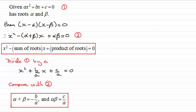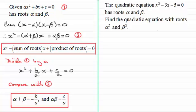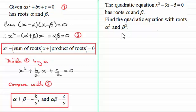Here is a typical kind of question based on these results. The quadratic equation x² − 3x − 5 = 0 has roots alpha and beta. We need to find the quadratic equation with roots α² and β². Going by this result, that equation will be x² − (α² + β²)x + α²β² = 0.